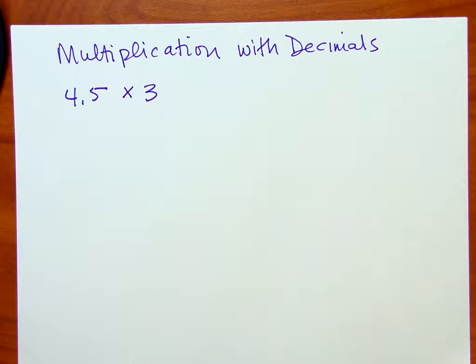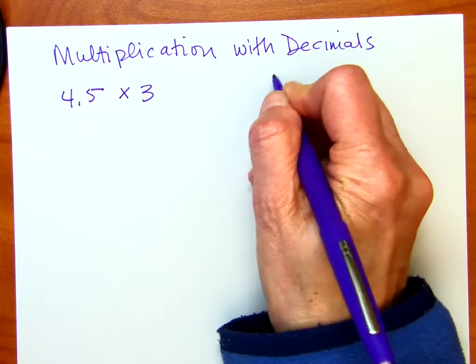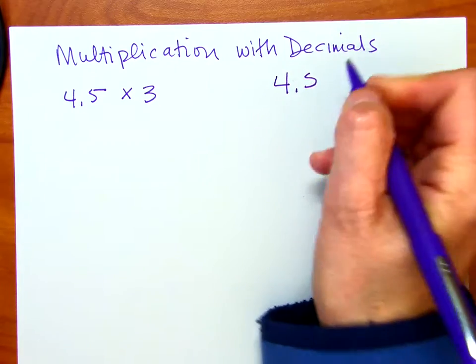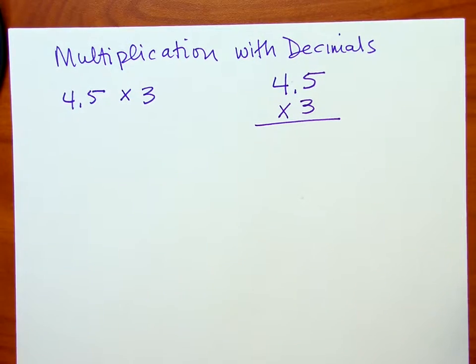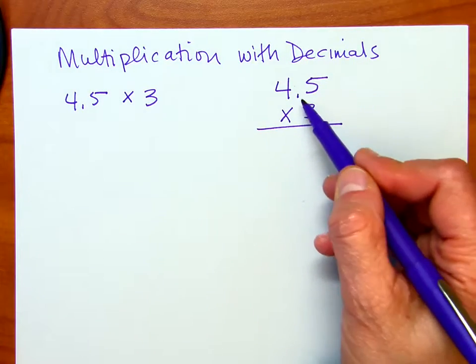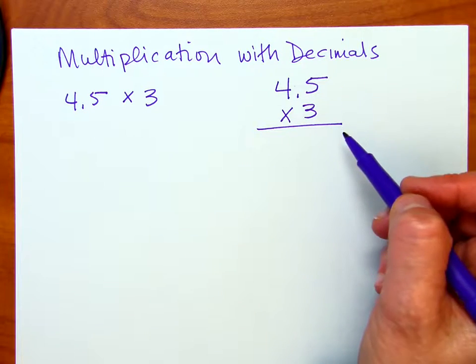In this video, I want to review multiplication with decimals. I'm going to go through the process, and I'm also going to show you how you could do a little estimating while you're doing these problems. In this first example, we have 4.5 times 3. Now you're going to set it up similar to the way that you would set up just working with whole numbers. For instance, we could rewrite it as 4.5 and then having the multiplier 3 down below. Now at this point, you can go ahead and ignore the decimal point, and we'll come back to that when we're done with our multiplication.